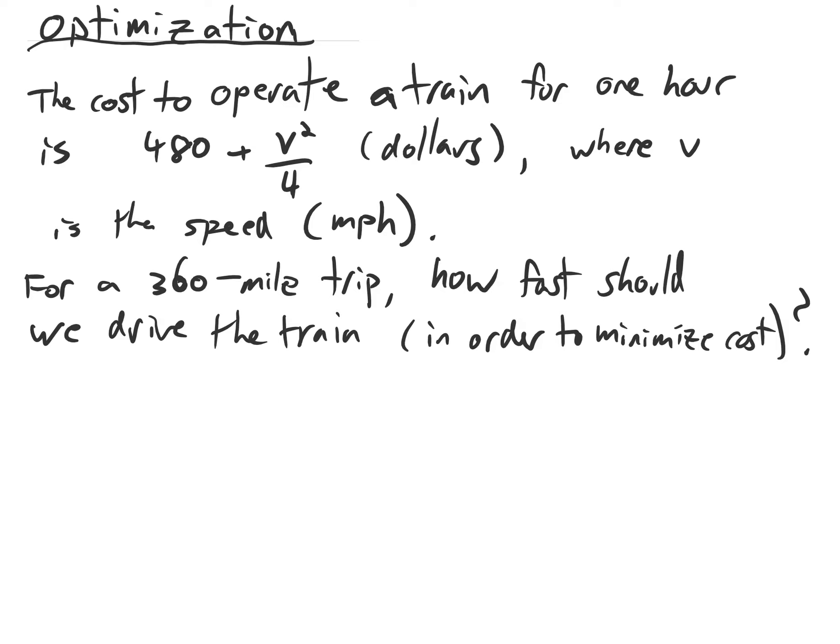As you increase the speed, you have to pay for fewer hours, but the cost for each hour is higher. So what's the speed that gives you the lowest cost for a 360 mile trip?